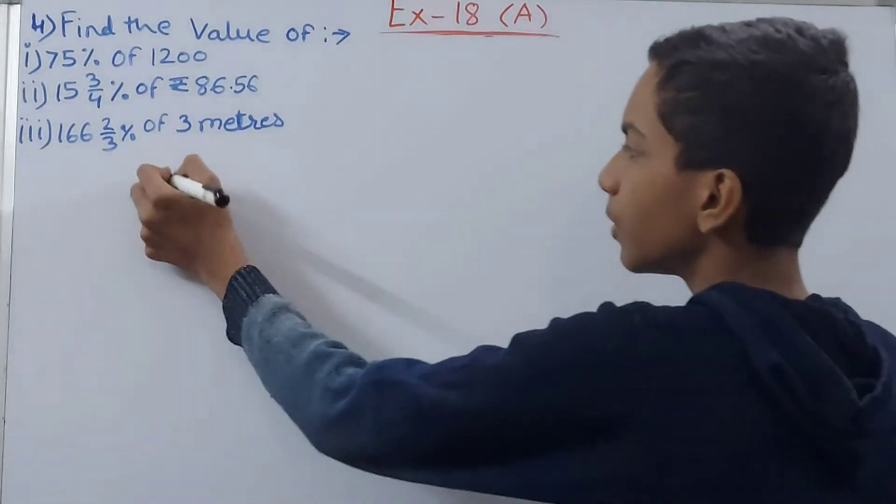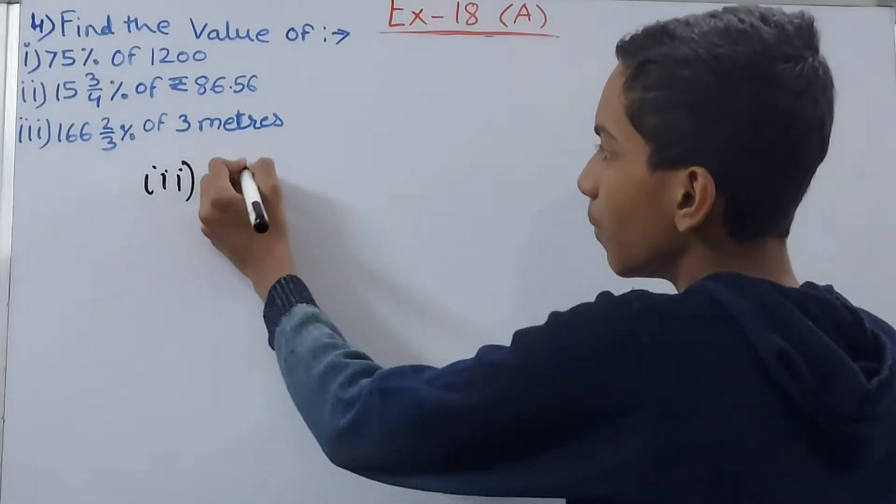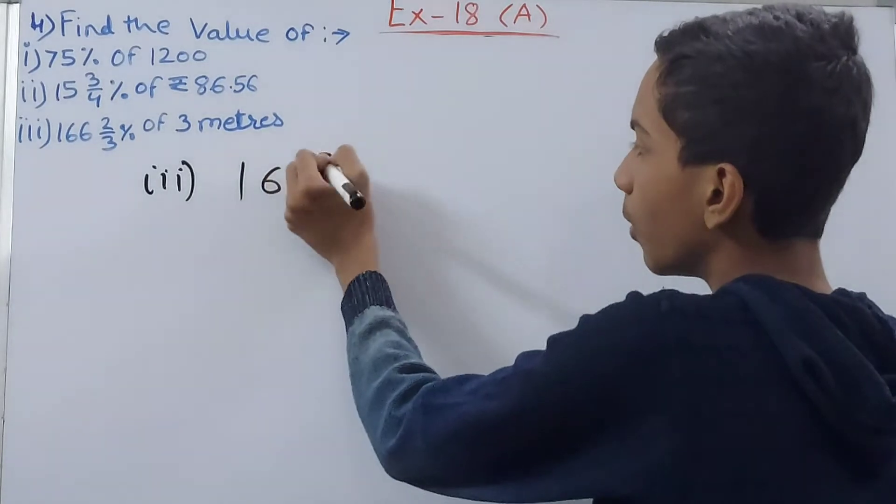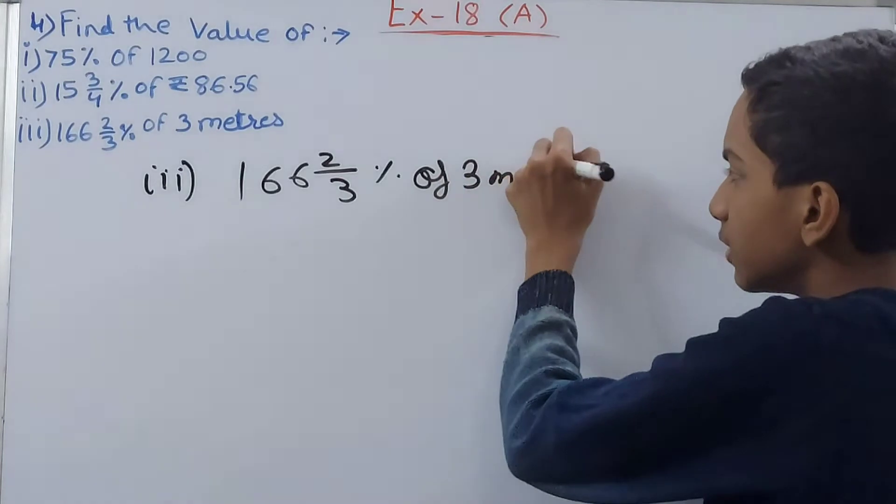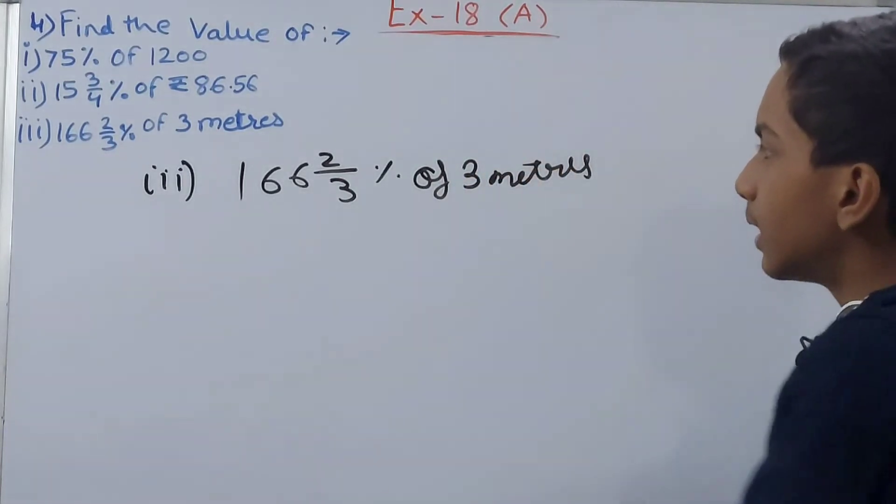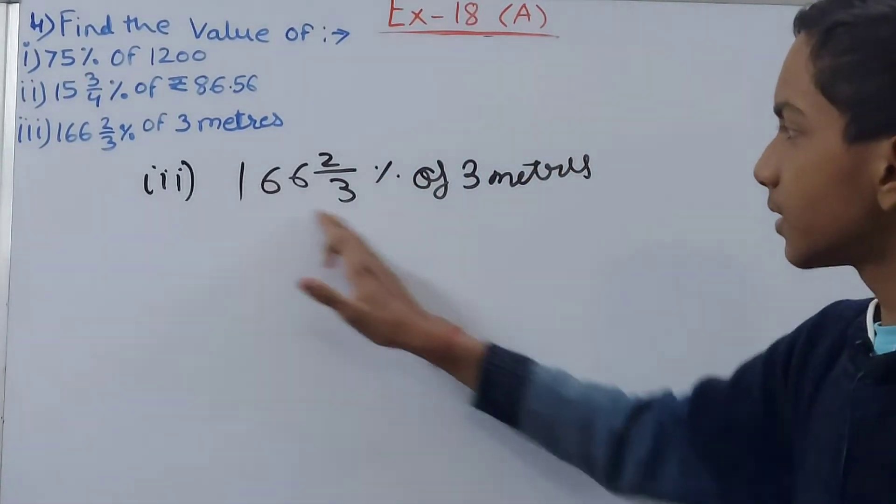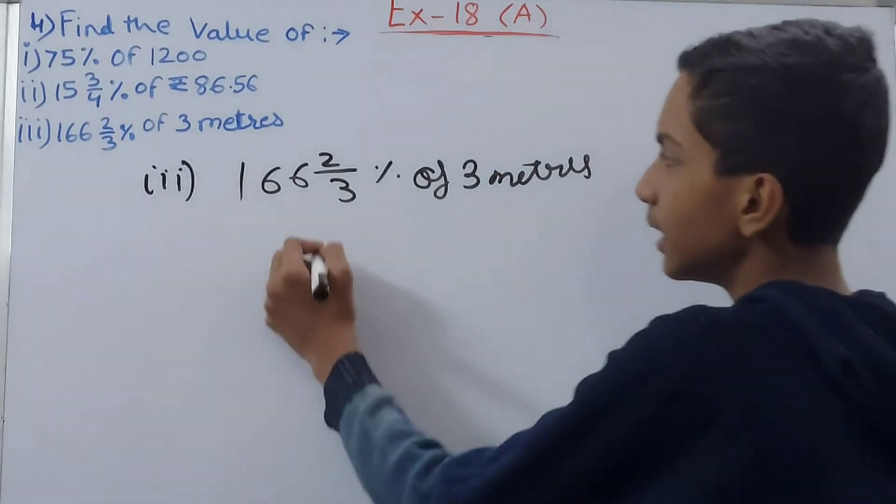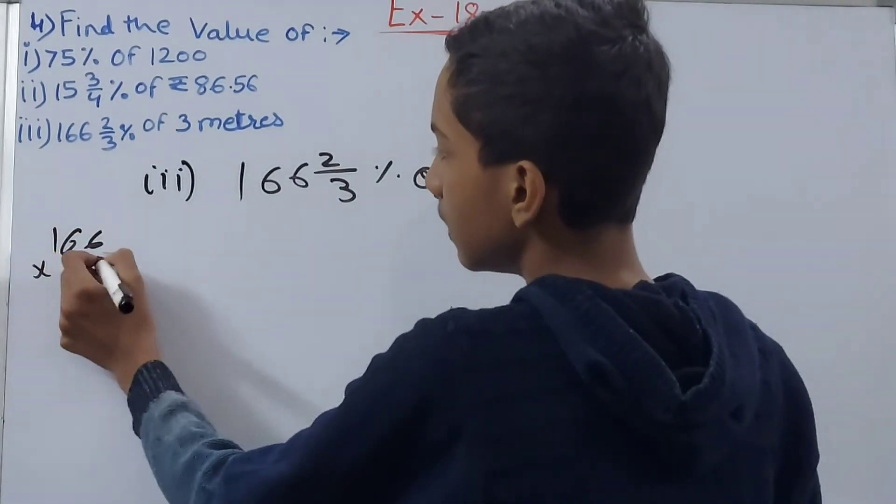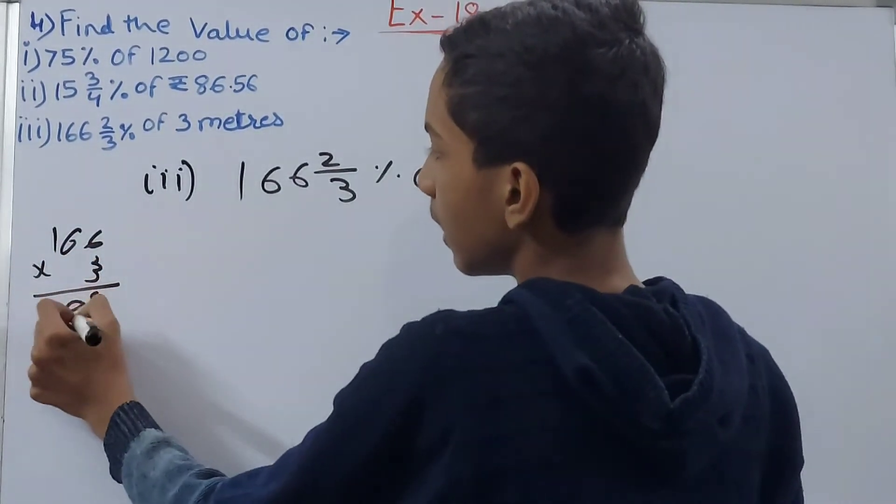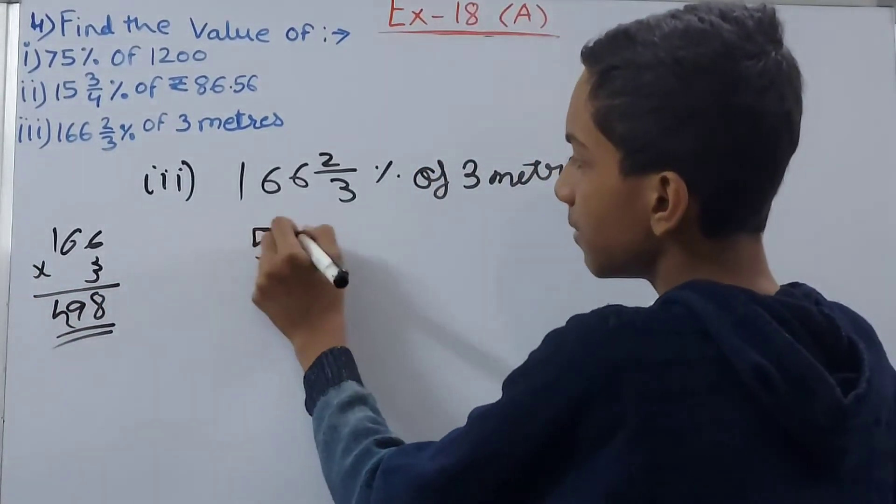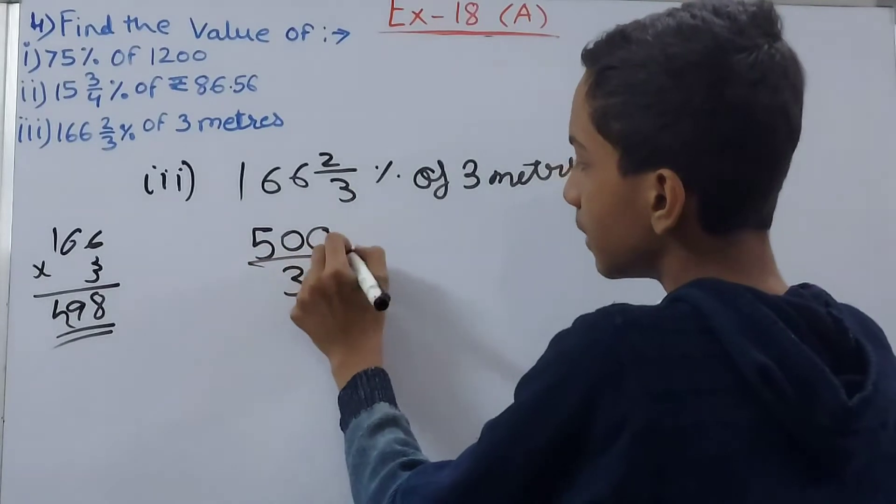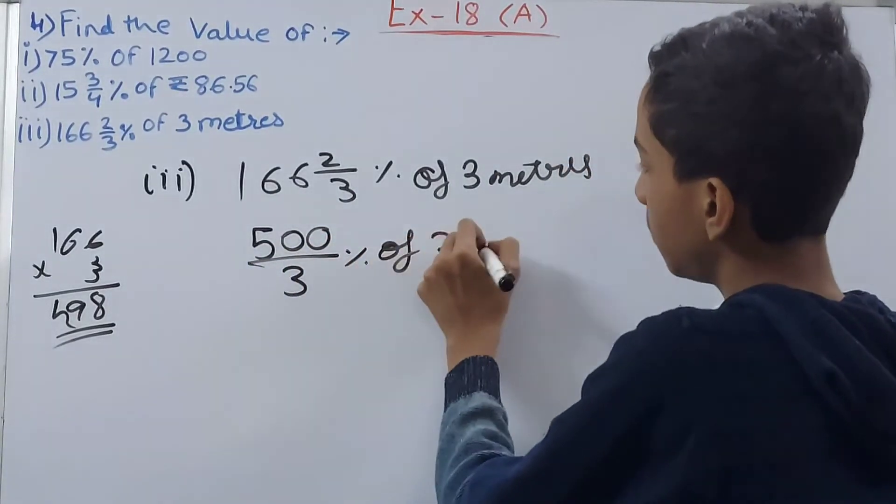Now let's move on to the next part. This is the third one. We have 166 whole 2 upon 3 percent of 3 meters. First convert this into improper: 166 into 3 is 498, and 2 here, so 500 upon 3 percent of 3 meters.